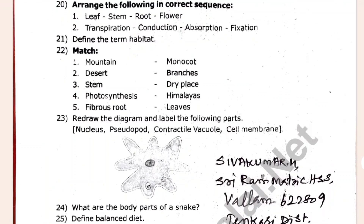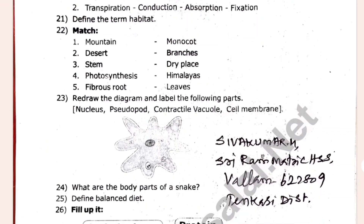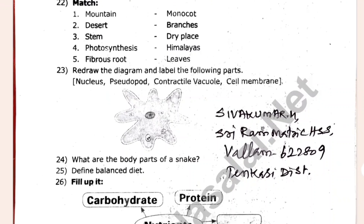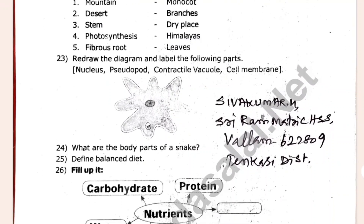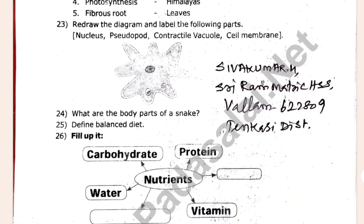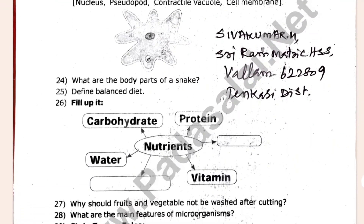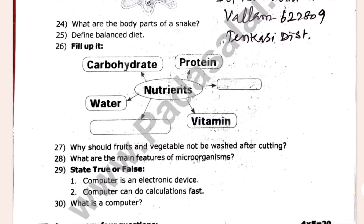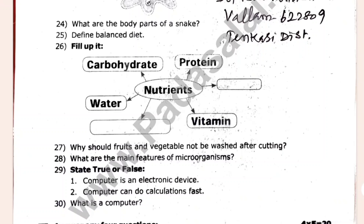Read the diagram — there are the following parts. What is the amount of juice? 2 marks. White fruits and vegetables should not be washed after cutting.